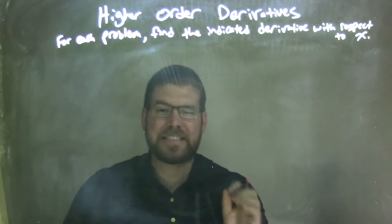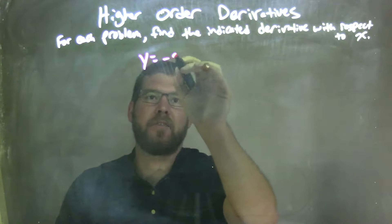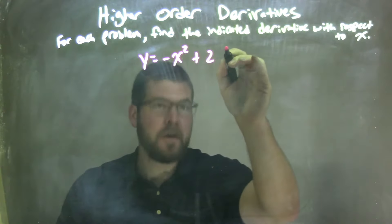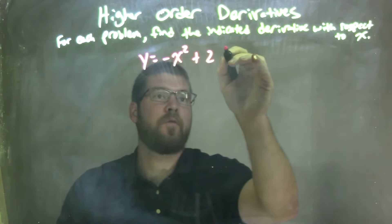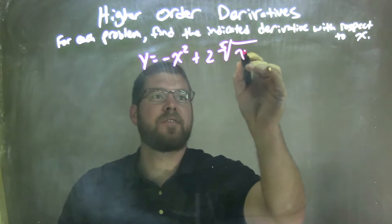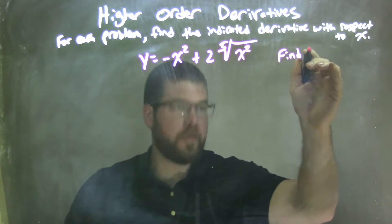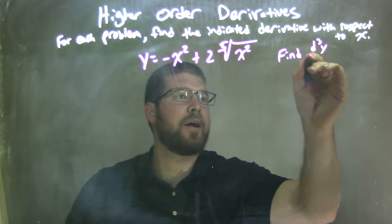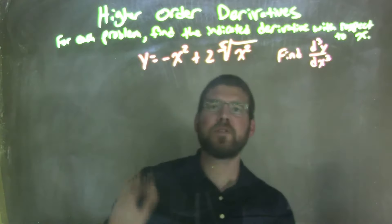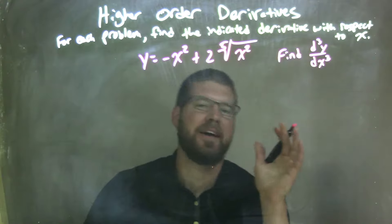So, if I was given this derivative, y equals negative x squared plus 2 times the fifth root of x squared, and we're going to find the third derivative — d³y/dx³. Well, first thing I'm going to do is I don't like seeing roots and exponents.